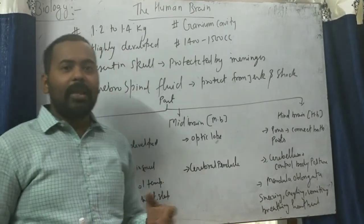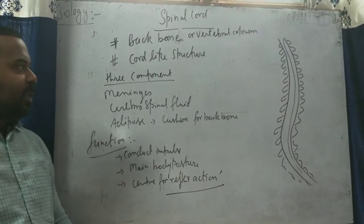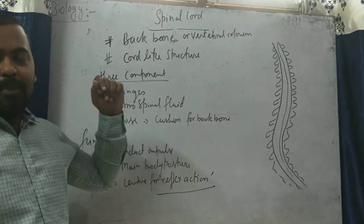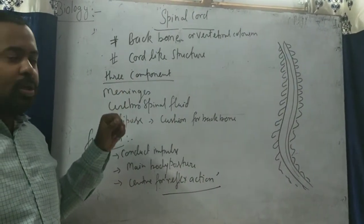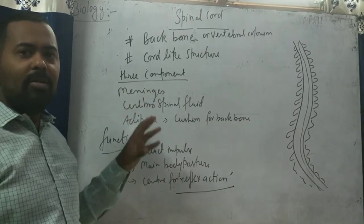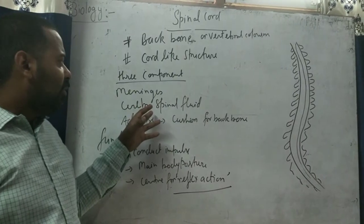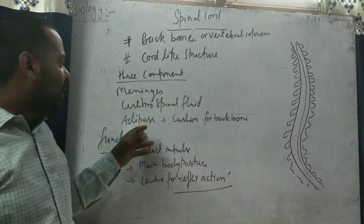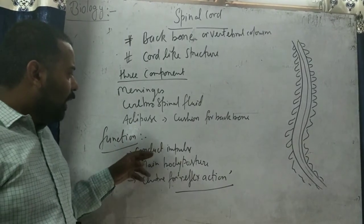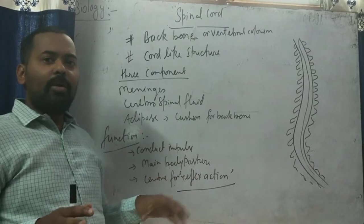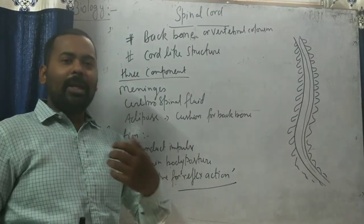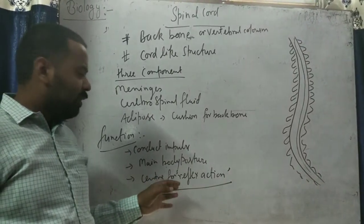Now moving to our next topic: the spinal cord. It is just like a strip/rod-shaped structure present in the back side of the body, also known as the backbone or vertebral column. It is a cord-shaped structure having three components: meninges, cerebrospinal fluid, and adipose tissue. Meninges protect the spinal cord, cerebrospinal fluid also protects it, and adipose tissue acts as a cushion. The function of the spinal cord is to conduct impulses from different parts of the body towards the brain and also maintain body posture.